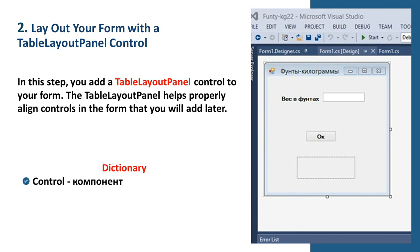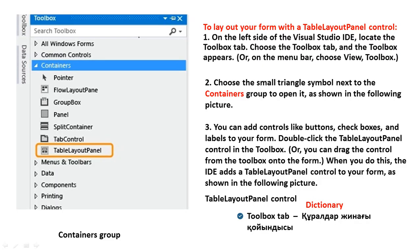Second question of our lecture: lay out your form with a table layout panel control. In this step you add a table layout panel control to your form. The table layout panel helps properly arrange controls in the form that you will add later. New words: control, component.